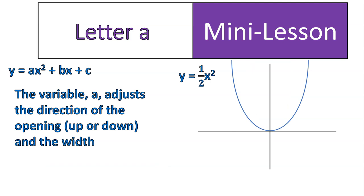If it's a larger value, it makes the parabola narrow. On the other hand, if it's a value less than 1, but not negative, just less than 1, like 1 half, it would make the graph wider.